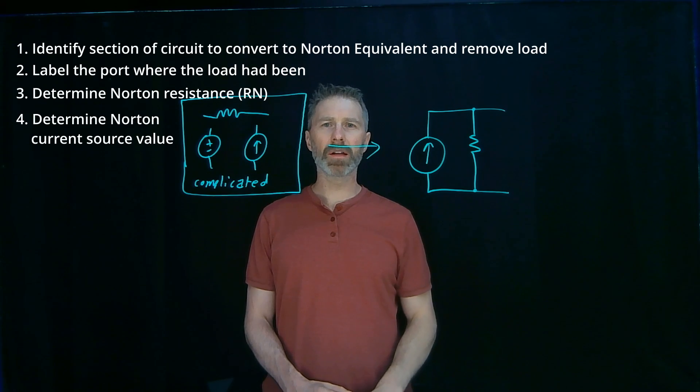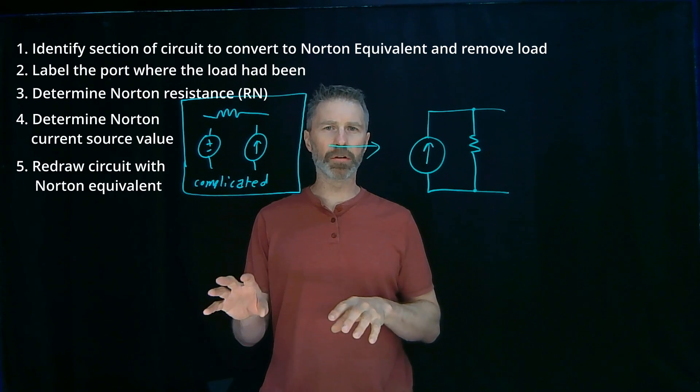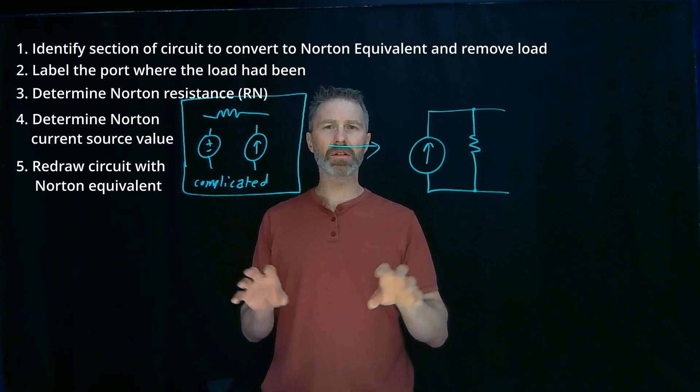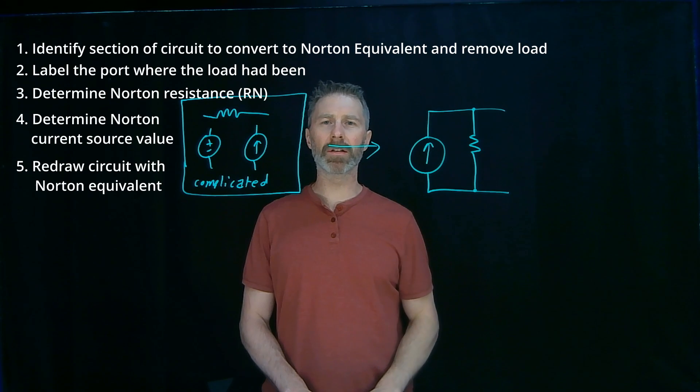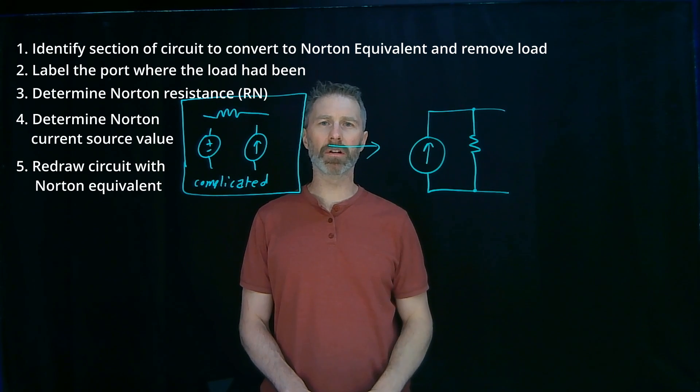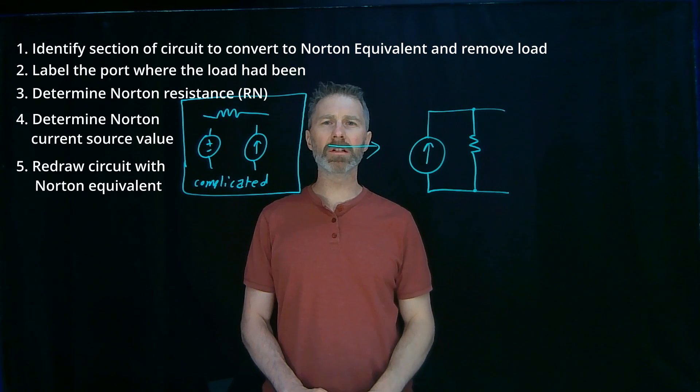And the fifth step would be, once you've got that Norton current and Norton resistance figured out, to simplify the circuit, redraw it as the Norton equivalent. I'm going to go through the details of those steps as I work through an example here.